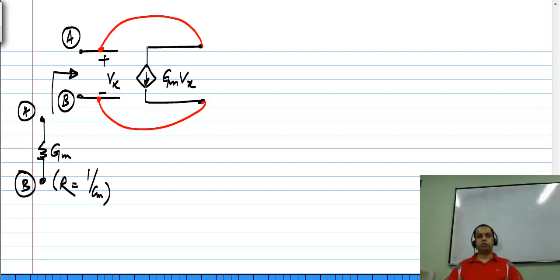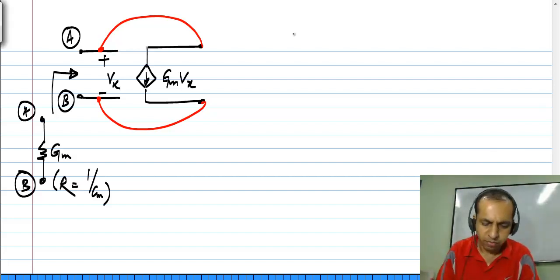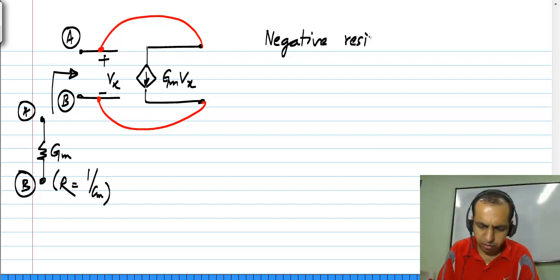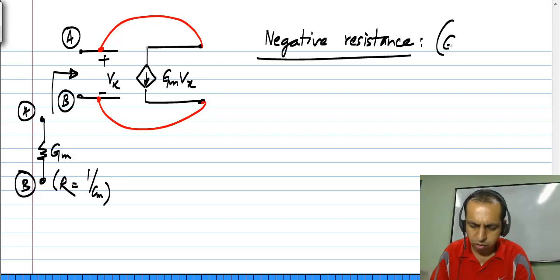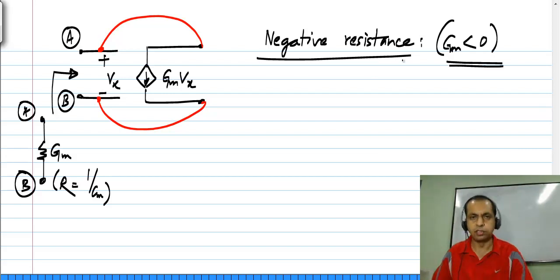One thing is that a physical resistor is constrained to have a positive resistance — that is, it always dissipates power; we will look at those aspects later. Whereas a resistance synthesized using control sources can equally well be negative. Negative resistance: in this particular arrangement we need Gm to be less than 0, in which case it realizes a negative resistance.